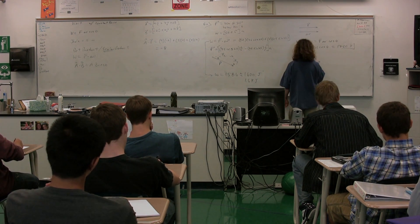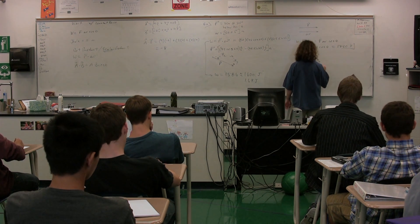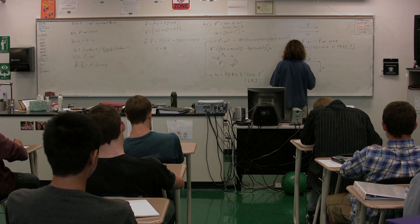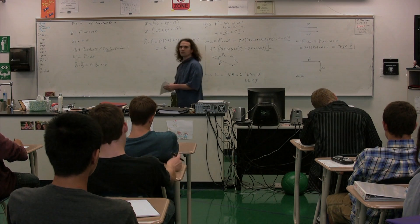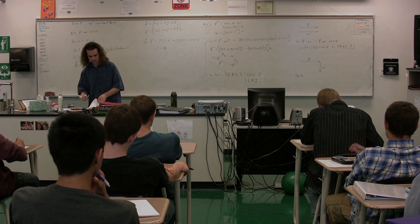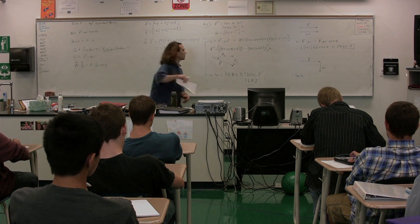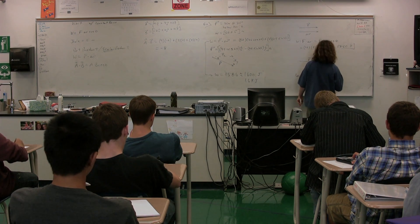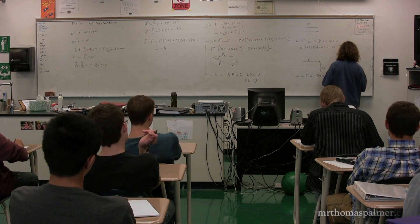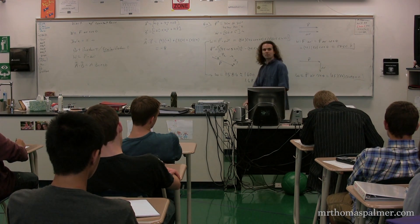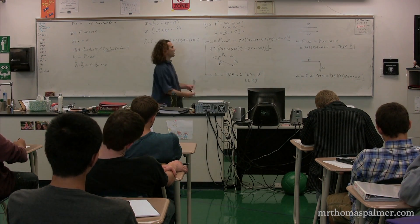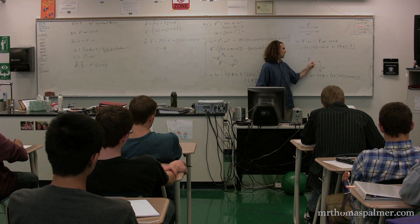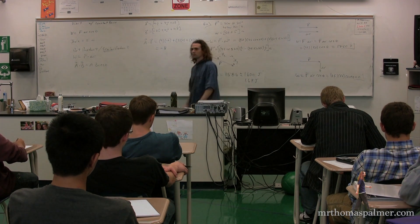What if the force and the displacement are at 90 degrees to one another? Then we get 35 times 50 times cosine of 90, which is zero. Going back to the basic definition of the scalar product, it's the force multiplied by the projection of delta R on the force. The projection of delta R on the force here is zero, so we end up with zero work.